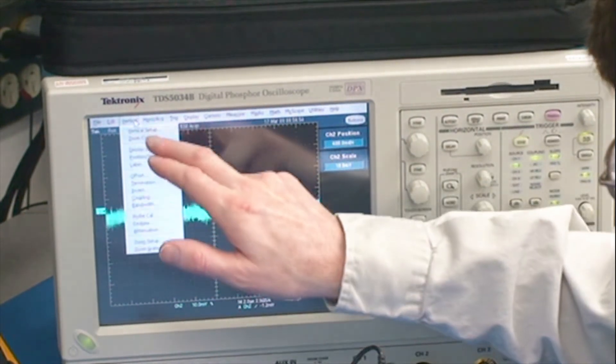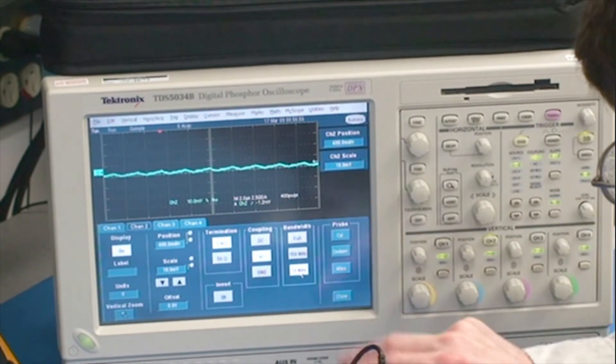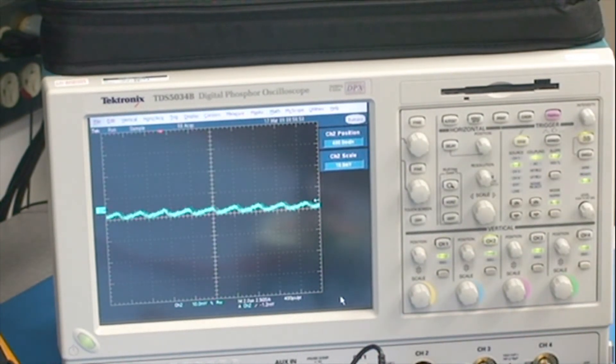Now if we change the bandwidth back to 20 megahertz, you can see we have less than 5 millivolts of ripple at the output.